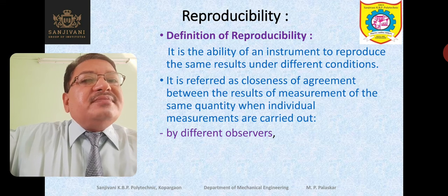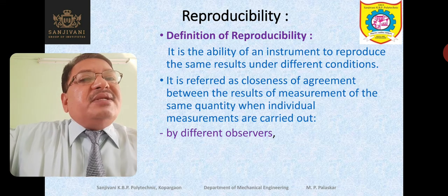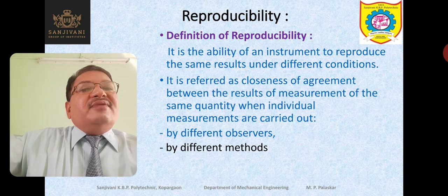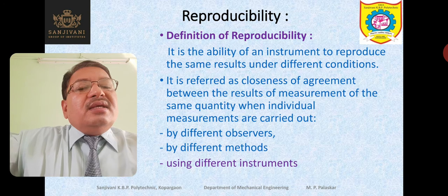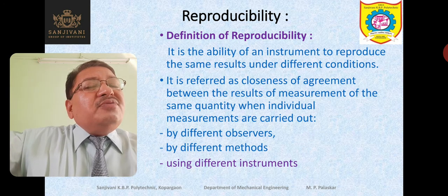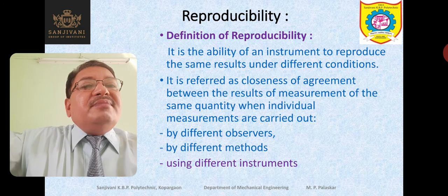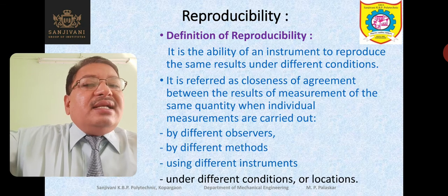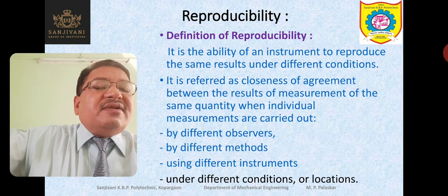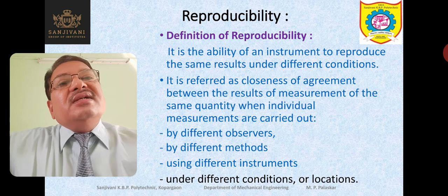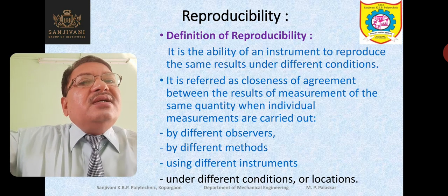Different observers may take the readings. If different methods are used for the measurement, the measured value should not vary. If you are using different instruments for measuring the same value, there should be minimum difference and minimum variation in the measured value — even if the measurement is done under different conditions or different locations. The values should be consistent. That is nothing but reproducibility of the measuring device.